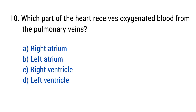Question number 10. Which part of the heart receives oxygenated blood from the pulmonary veins? The right answer is option B. Left atrium.